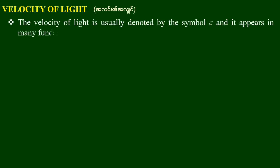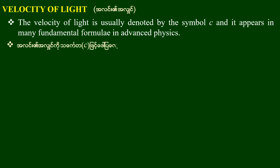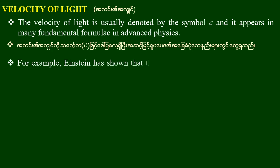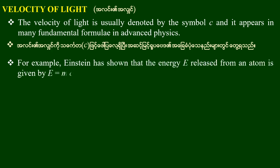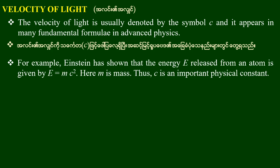The velocity of light is usually denoted by the symbol C, and appears in many fundamental formulas in advanced physics. For example, Einstein has shown that the energy released from an atom is given by E = mc², where M is mass. Thus C is an important physical constant.